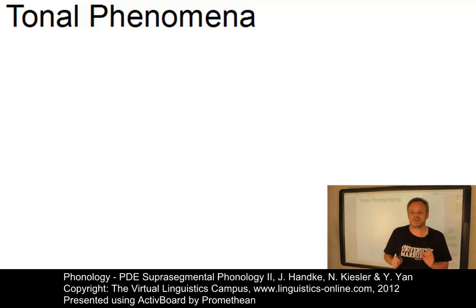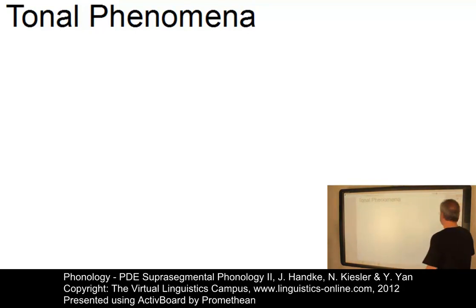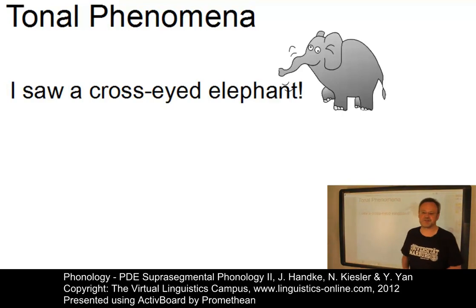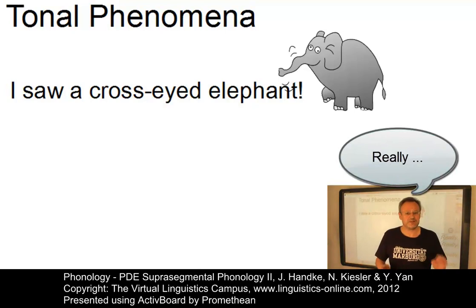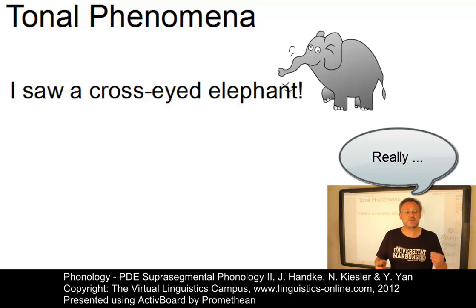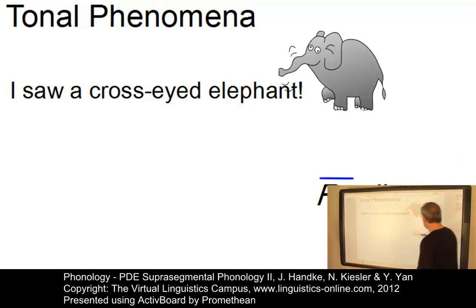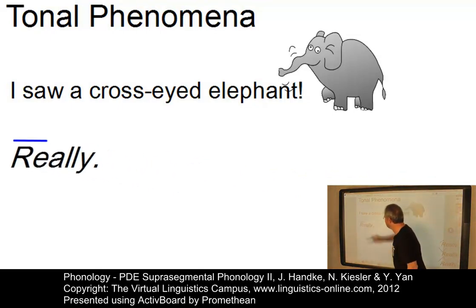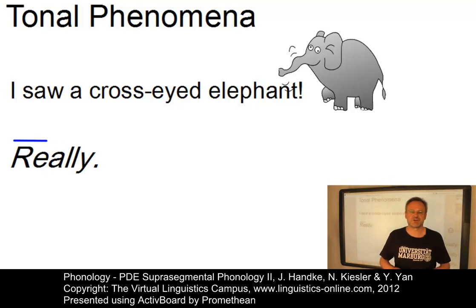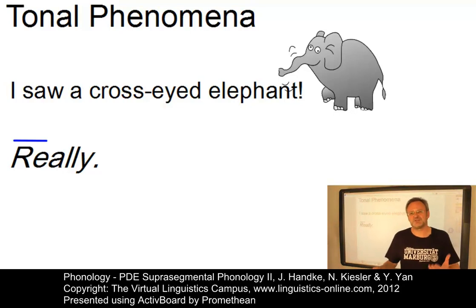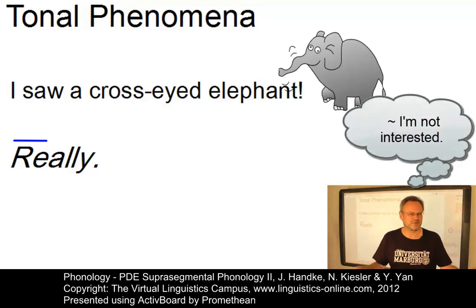Suppose someone says the following sentence: 'I saw a cross-eyed elephant.' And your answer would be: 'Really.' The interpretation of your answer depends on the tone associated with the nucleus of that word. For example, if the nucleus is associated with a level tone — 'I saw a cross-eyed elephant' and someone says 'really' — then the interpretation will be something like lack of interest.